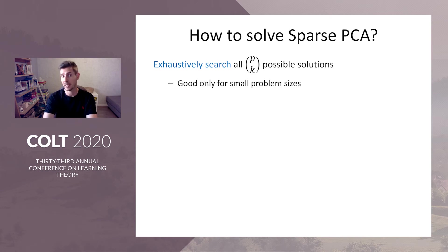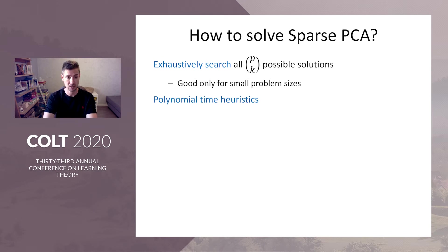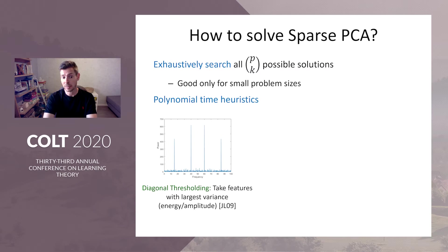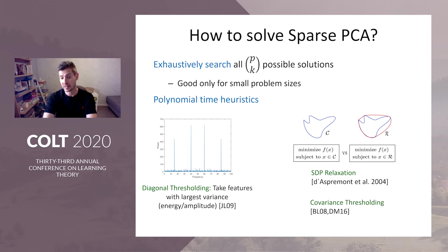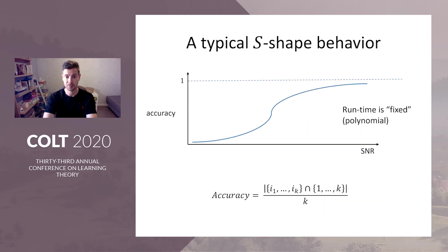If our problem size is small, we may naively search exhaustively over all K-by-K sub-matrices and choose the one that explains the best variance. Or alternatively, use polynomial time heuristics such as diagonal thresholding, where we take the features with the largest variance, or an L1 relaxation of the L0 constraint, turning the optimization problem into a polynomial-time SDP relaxation — semi-definite programming — or spectral algorithms like covariance thresholding.